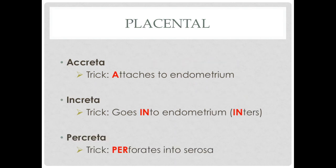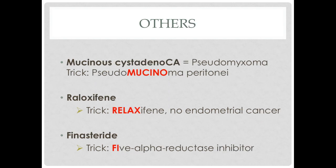There are several placental issues that can happen before or after labor. Placental accreta is when it attaches to the endometrium — they'll say the placenta was removed in pieces after labor rather than as a whole unit, because it's attached; it enters the endometrium. Placental percreta is going to perforate into the serosa and actually sticks to the bladder and bowels or rectum. The rest includes mucinous cystadenocarcinoma, for which a key word is pseudomyxoma peritonei — think of 'pseudomucinoma peritonei.'